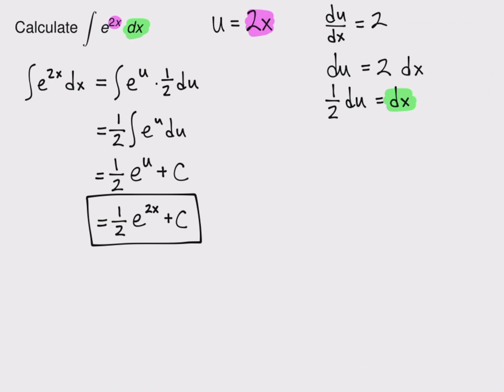Now, the nice thing about integrating is you can always double check your work by differentiating. So let's double check this. I'm going to double check that the antiderivative I just found really is an antiderivative. And I'll do that by taking the derivative with respect to x. So I have to use the chain rule here. That's a good sign that u-substitution was the right choice.